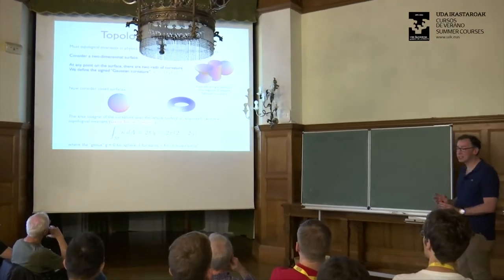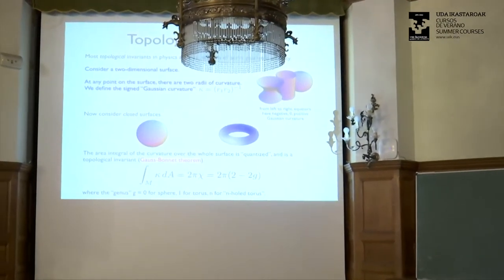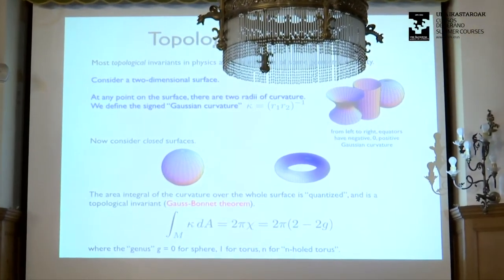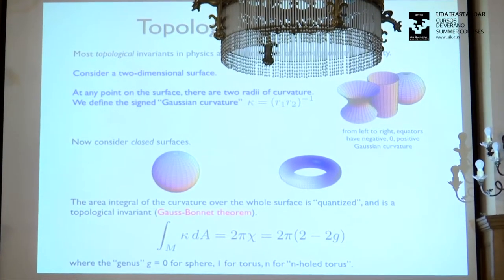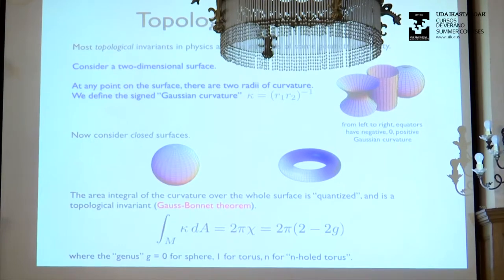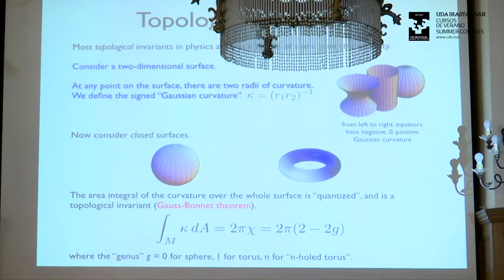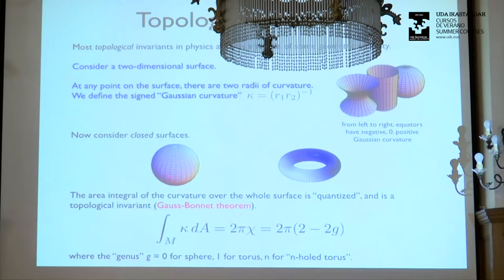One of the common ways that topology emerges in physics is that geometry emerges all the time, and if you have some geometrical object like a curvature and integrate it over an entire closed manifold, something magical can happen. The famous example is the Gauss-Bonnet theorem: if I take a two-dimensional surface in three-dimensional space, at any point there are two perpendicular radii of curvature, and we define the Gaussian curvature as one over their product with a sign — positive Gaussian curvature means something like a sphere, negative is like a hyperboloid.